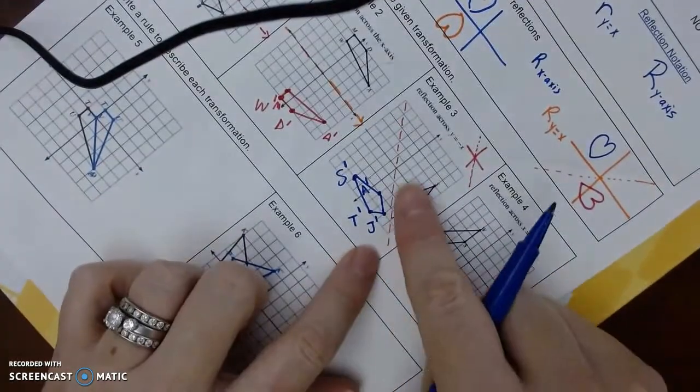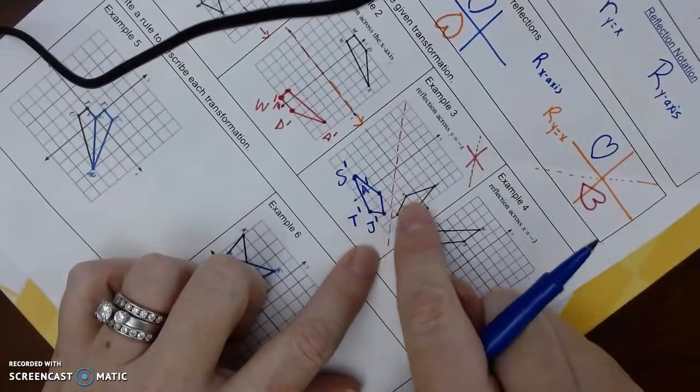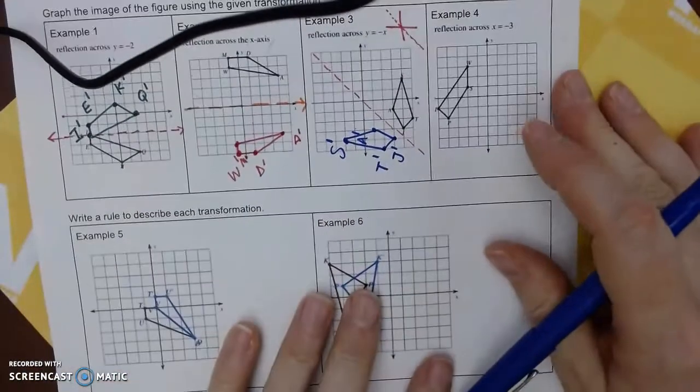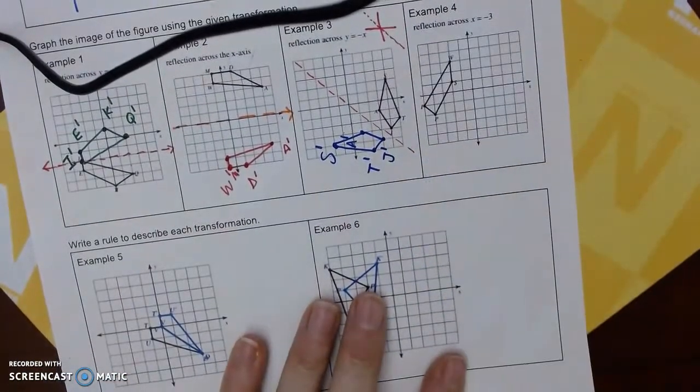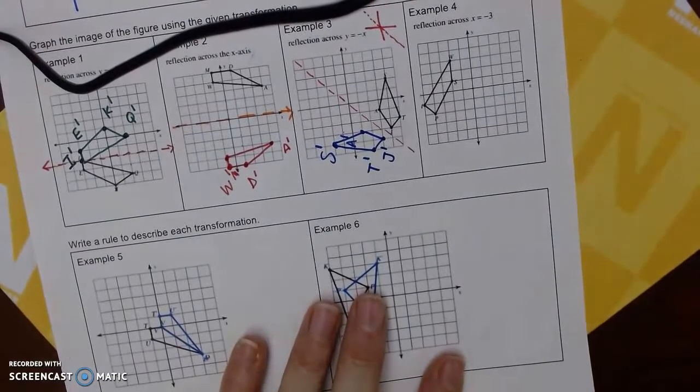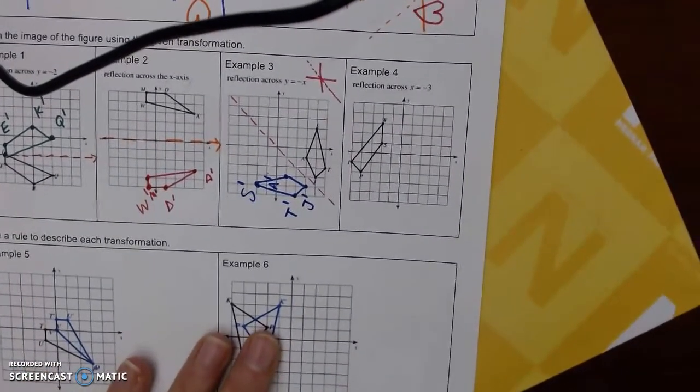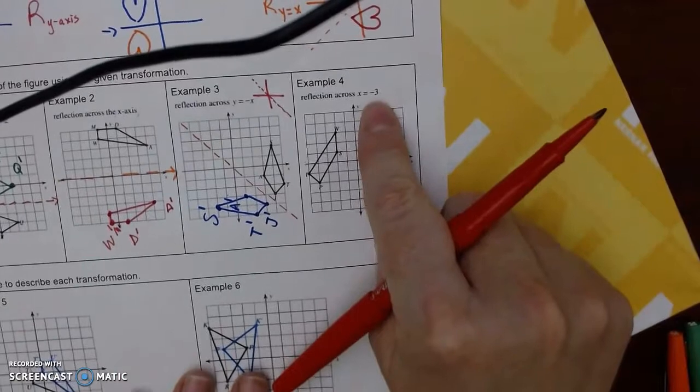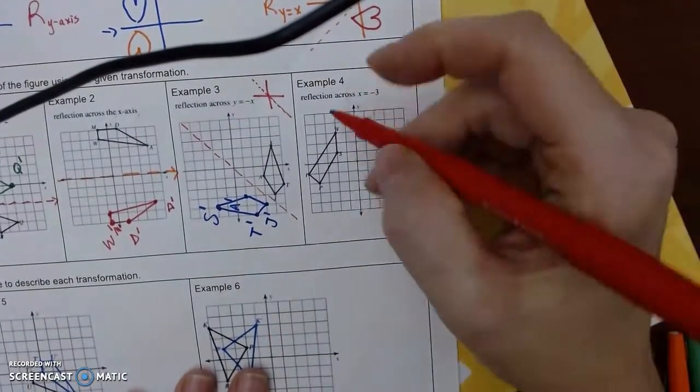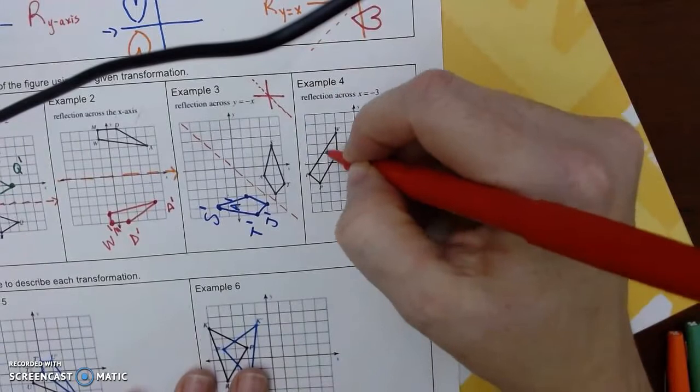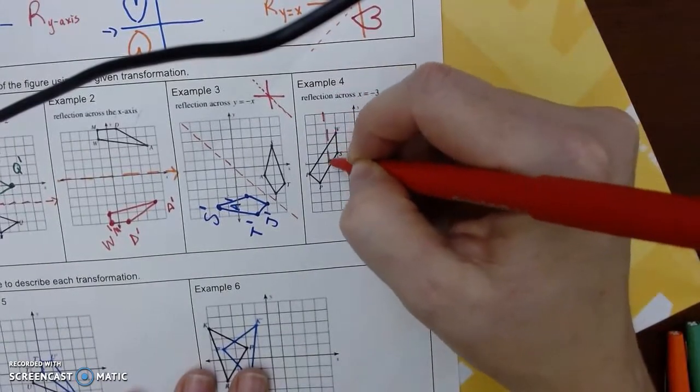I have a harder time doing it when it's up and down, so just a little tip. And then we can also change. Instead of just being the x-axis, we can be x equals negative three. So we go one, two, three, which happens to be in the middle of our shape. So remember, you're always counting to that red line.